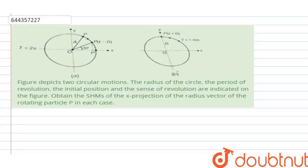Figure depicts two circular motions, the radius of the circle, the period of the revolution, the initial position, and the sense of the revolution are indicated on the figure. Obtain the SHM of the X projection of the radius vector of the rotating particle P in each case. Now there are two cases given A and B. We need to find out the SHM for this given A and B case.